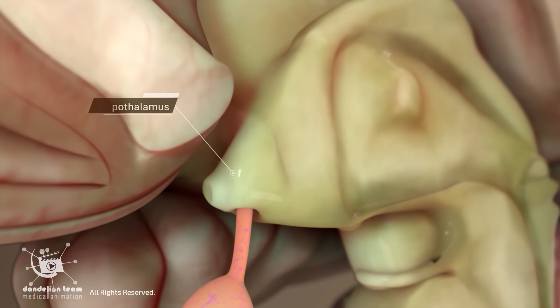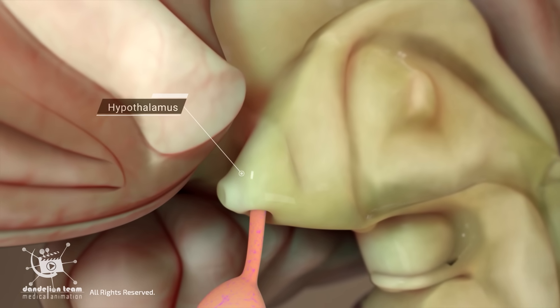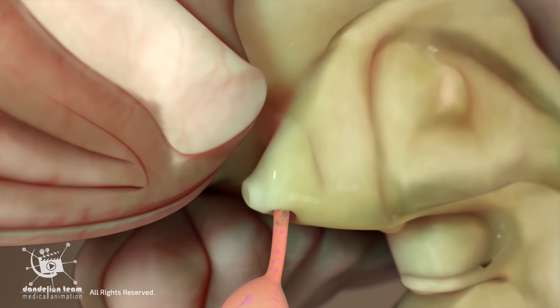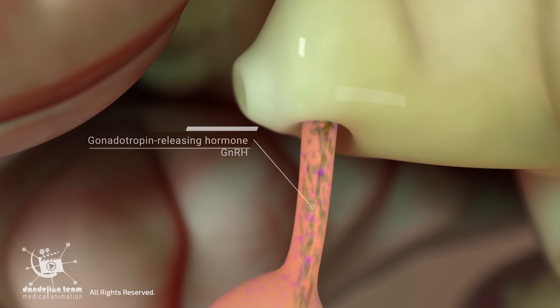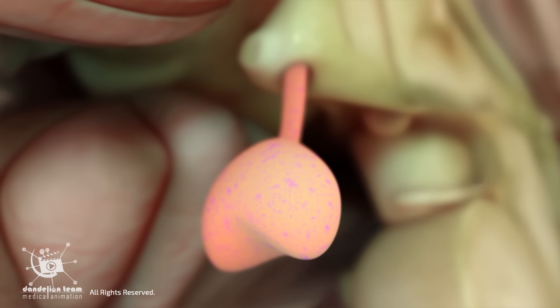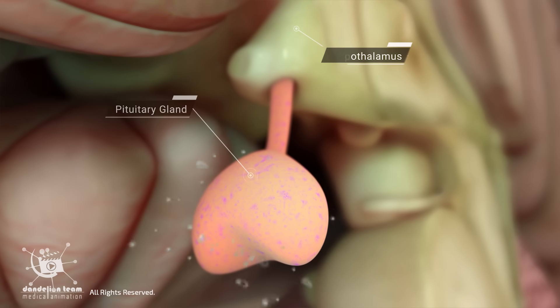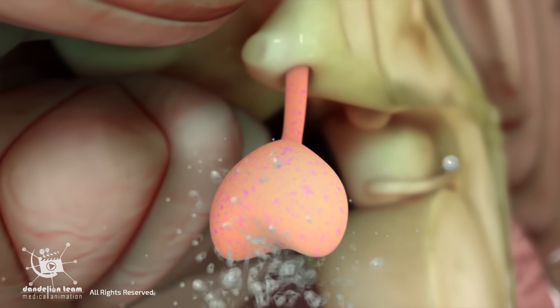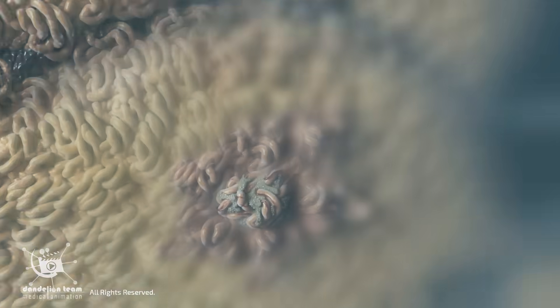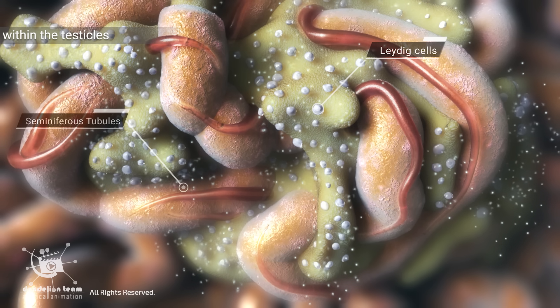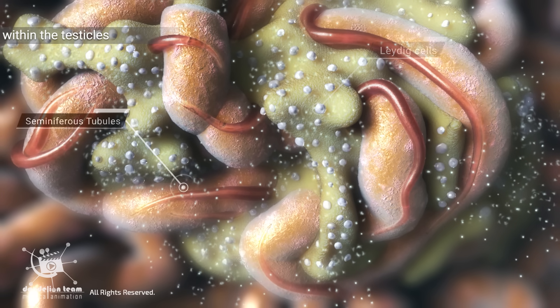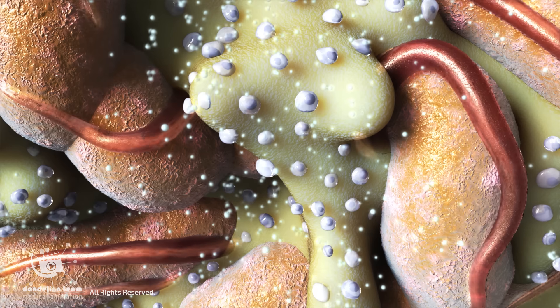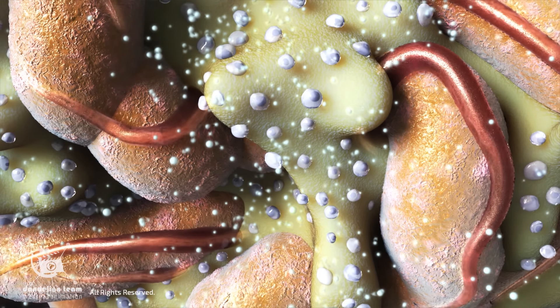The hypothalamus, located at the base of the brain, acts as the control center to maintain testosterone levels within a healthy range. It produces a hormone called GnRH. The pituitary gland, located just below the hypothalamus, responds to GnRH by releasing hormone LH. The LH hormone, released by the pituitary gland, stimulates the LH cells to synthesize and release testosterone into the bloodstream.